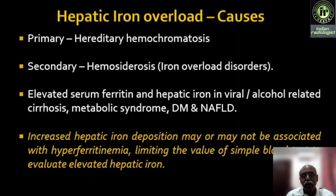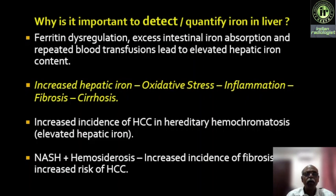Increased iron deposition may or may not be associated with hyperferritinemia. There is a limitation of assessing plasma ferritin and transferrin saturation because lab parameters are not very sensitive in trying to tell us about iron homeostasis in the body. MRI liver iron quantification becomes a foolproof method to assess iron homeostasis. Increased hepatic iron leads to oxidative stress, inflammation, fibrosis, and cirrhosis, and NASH plus hemosiderosis have a deadly combination with increased incidence of fibrosis and increased risk of HCC.